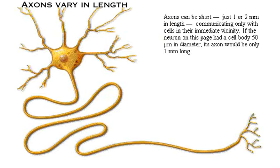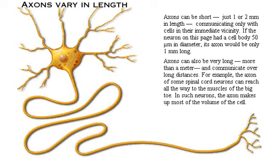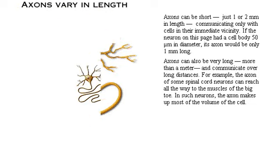Axons vary in length. They can be short — just one or two millimeters — communicating only with cells in their immediate vicinity. If the neuron on this page had a cell body 50 microns in diameter, its axon would be only one millimeter long. Axons can also be very long, more than a meter, and communicate over long distances. For example, the axon of some spinal cord neurons can reach all the way to the muscles of the big toe.